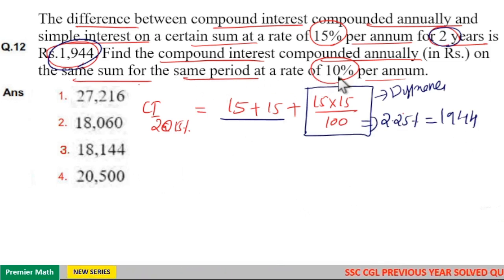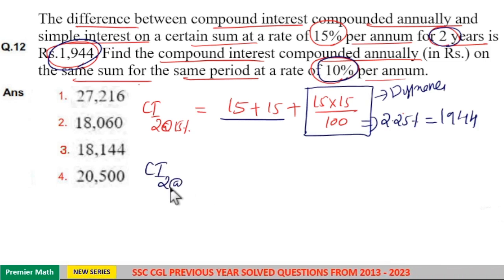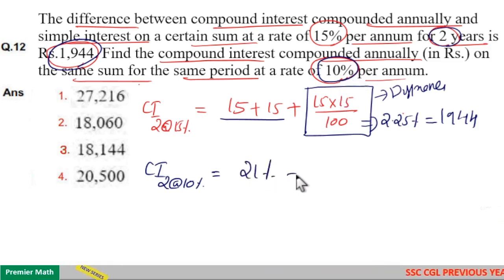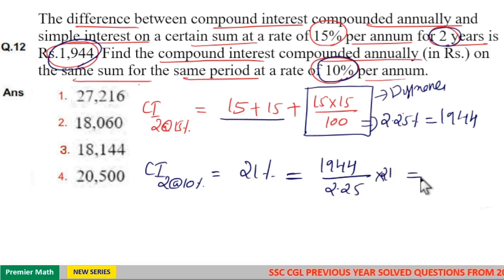If 2.25 percentage is 1944, then we need compound interest for 10% per annum for 2 years. At the rate of 10% means 10 plus 10 plus (10 × 10)/100, that is 21 percentage, which is the compound interest for 2 years at 10% per annum. If 2.25% is 1944, then 21% is 1944 divided by 2.25 into 21.